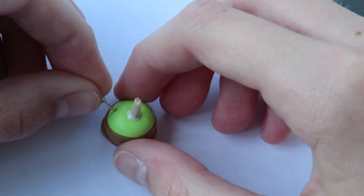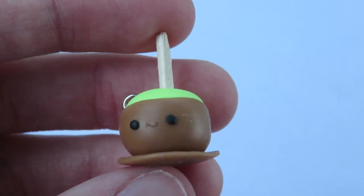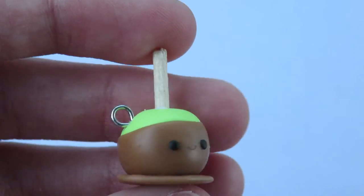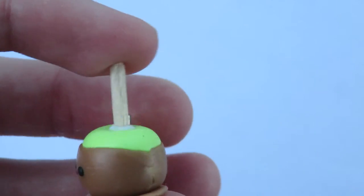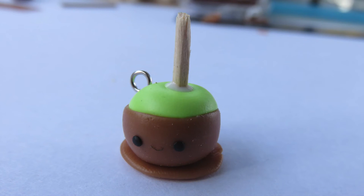And if you want to make it a charm, just add an eye pin or a head pin or eye screw. So then I added the kawaii face off camera because I'm not good at doing faces on camera. And you're just going to pop this little guy in the oven at 275 degrees Fahrenheit for 15 minutes.